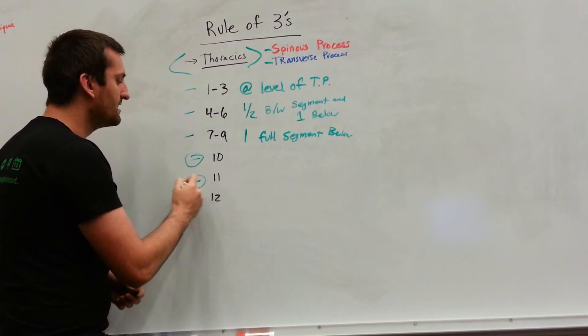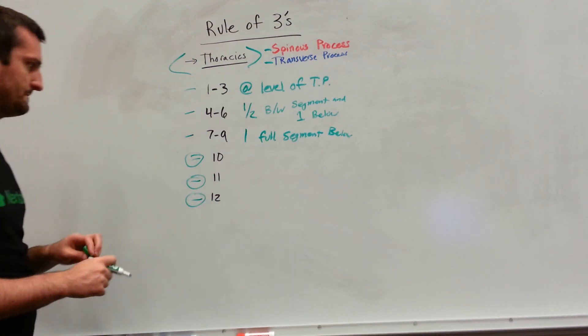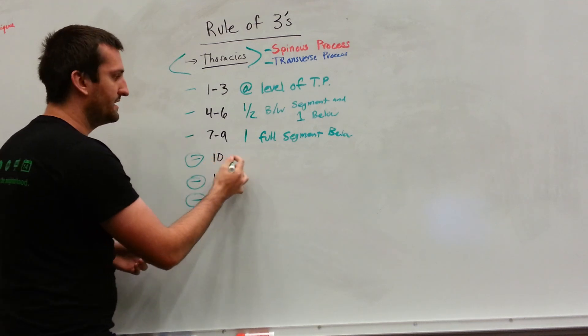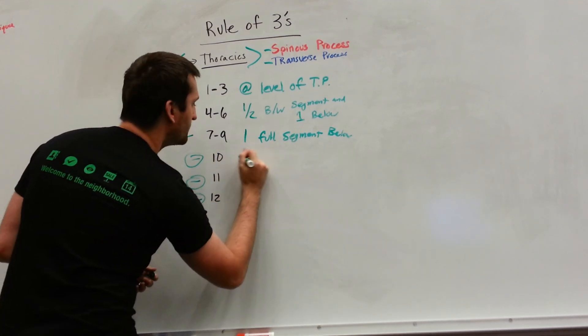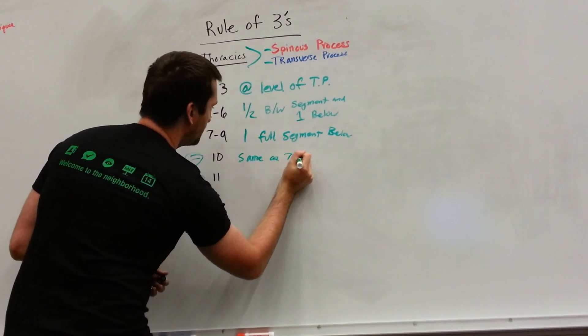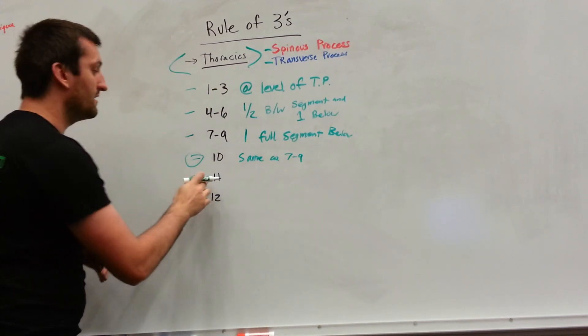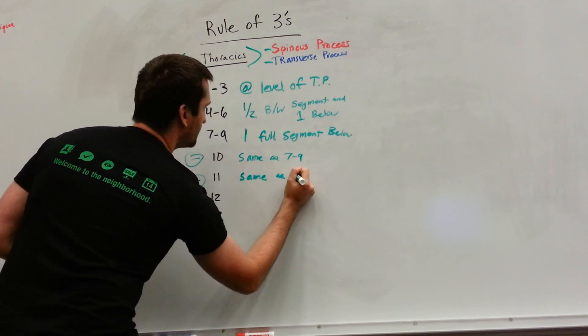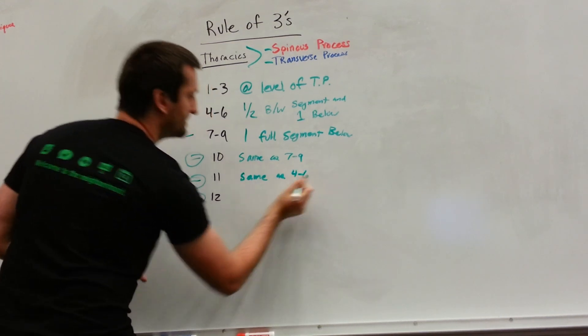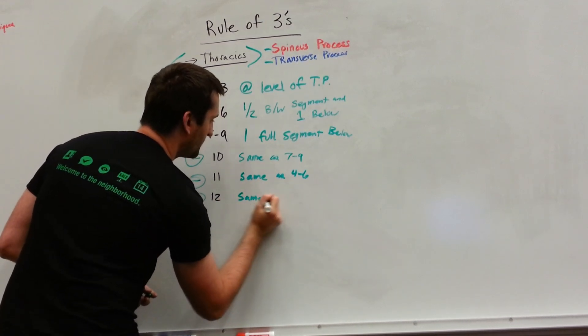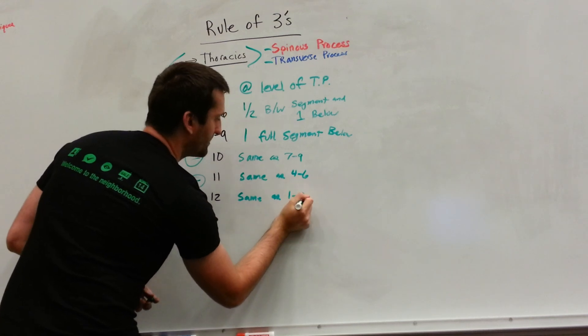Now we're going to be talking about 10, 11, and 12. Where do these fit in? Well, T10 is going to be the same as 7 to 9. 11 is going to be the same as 4 to 6. And then T12 is going to be the same as 1 to 3.